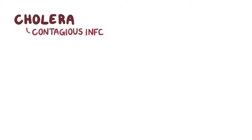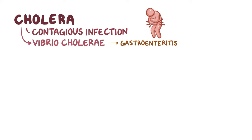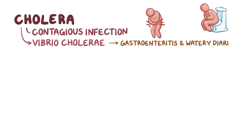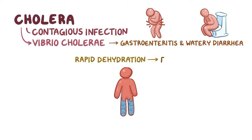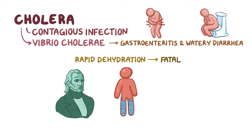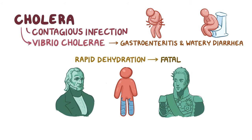Cholera is a contagious infection caused by the bacteria Vibrio cholerae, which can cause severe gastroenteritis and excessive watery diarrhea for several days. Rapid dehydration and electrolyte imbalances can be fatal, as suspected in the deaths of James K. Polk, the 11th president of the United States, and Charles X, the king of France.